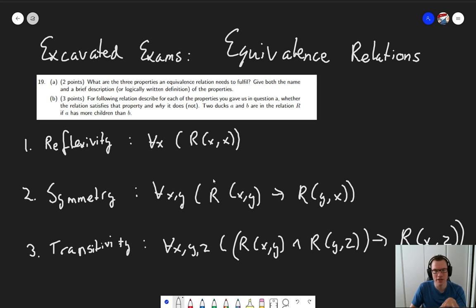Good, because that means we can look at the more interesting question B. For the following relation, describe for each of the properties you gave in question A whether the relation satisfies that property and why it does or does not. So what is this relation? Two ducks, A and B, are in the relation R if A has more children than B.